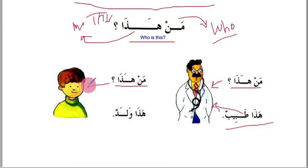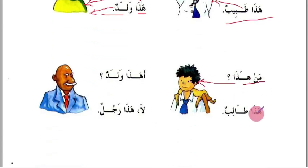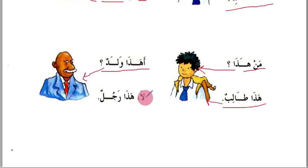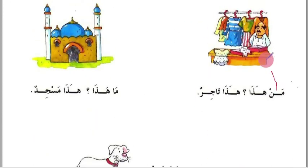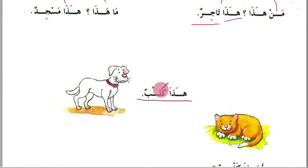'Man hadha? Hadha talibun' — who is this? This is a student. 'Ahadha waladun? La, hadha rajulun' — is this a boy? No, this is a man. 'Man hadha? Hadha tajir' — who is this? This is a merchant. 'Ma hadha? Hadha masjid' — what is this? This is a mosque.